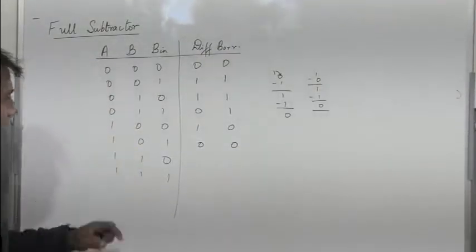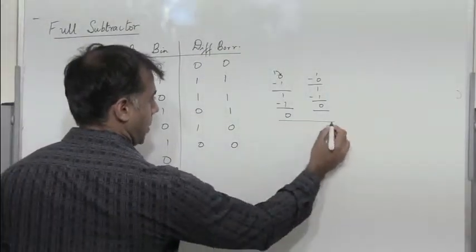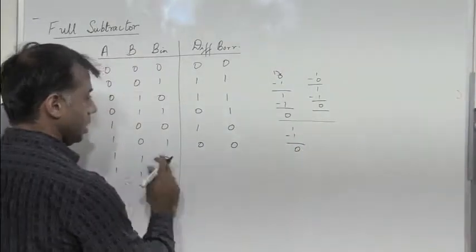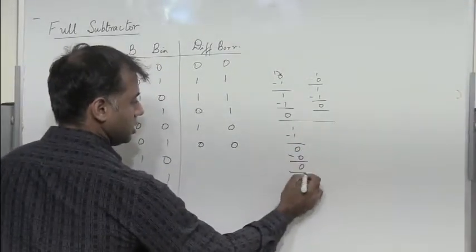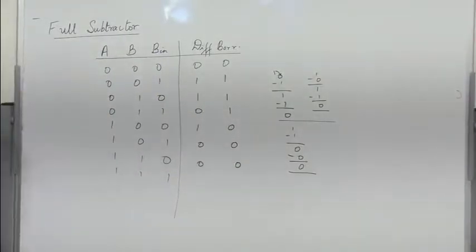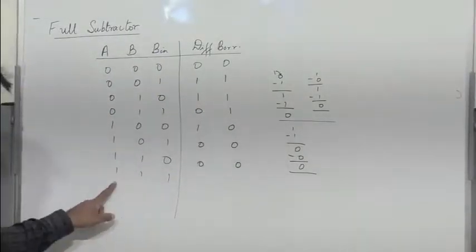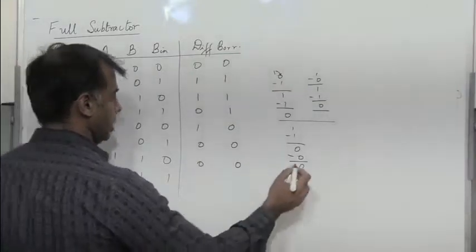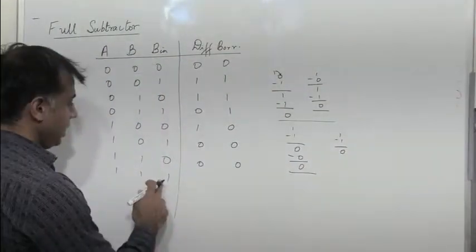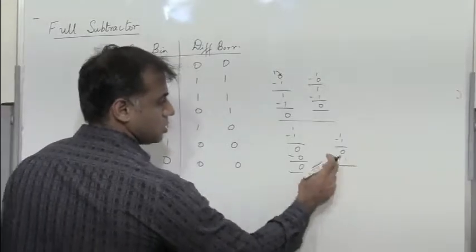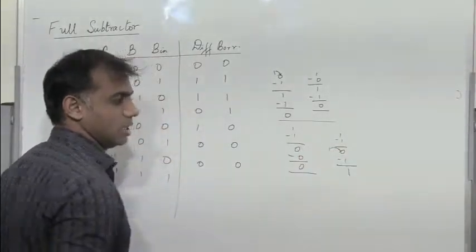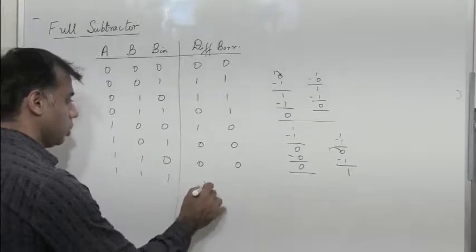Next, 1 minus 1 is 0, minus 0 is again 0. So there is no difference and there is no borrow. Next, 1 minus 1 is 0, and then minus 1: so 0 minus 1 — I definitely need a borrow, and I will get a difference of 1. So I get 1, 1.